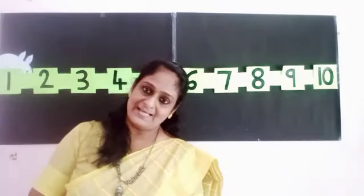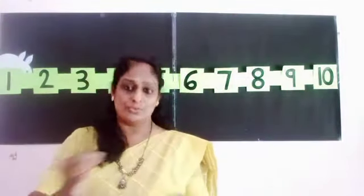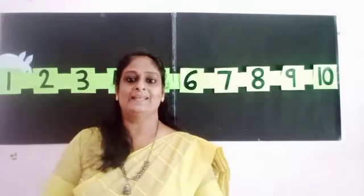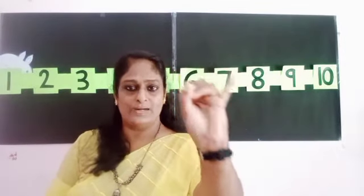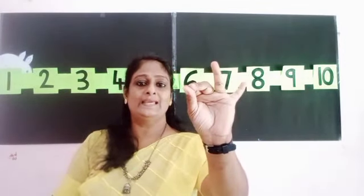5. Descending, descending, big to small. Descending, descending, big to small. 5, 4, 3, 2, 1. 5, 4, 3, 2.